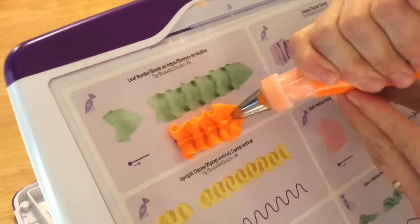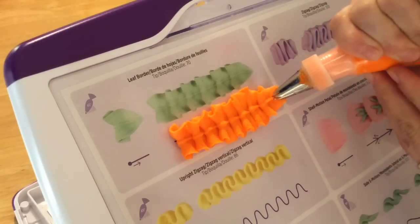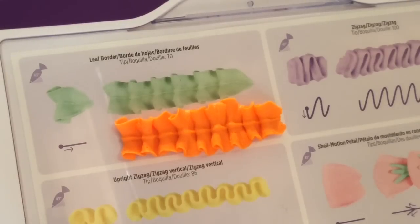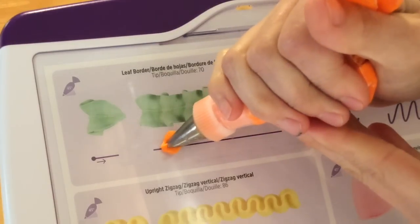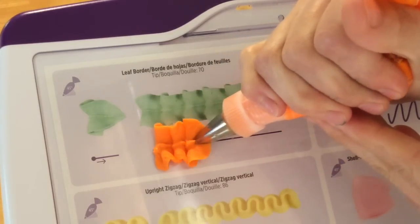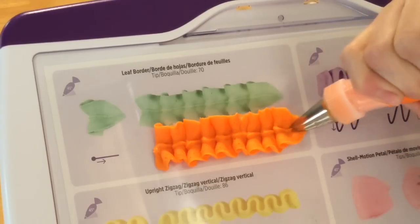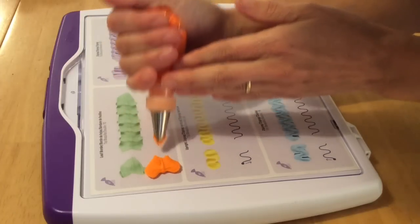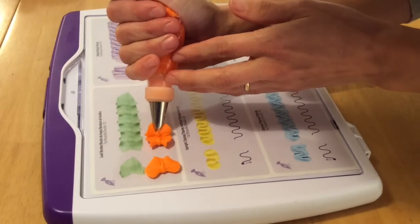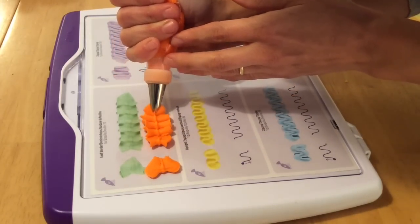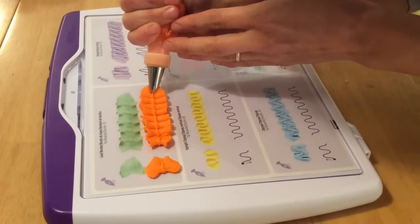You could use any of the leaf tips, the number 66 or 67. The number 70 is a little bit larger. You can also vary the ruffle. In the one I just did, I made it bigger and thicker towards the middle, or you can make them the same size throughout. It's just a simple shell motion piped using a large leaf tip instead of a star tip.